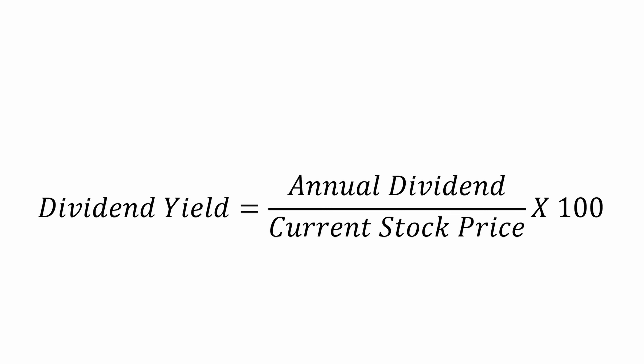The dividend yield is expressed as a percentage and you can calculate it by dividing the annual dividend by the current stock price and then multiplying by 100.